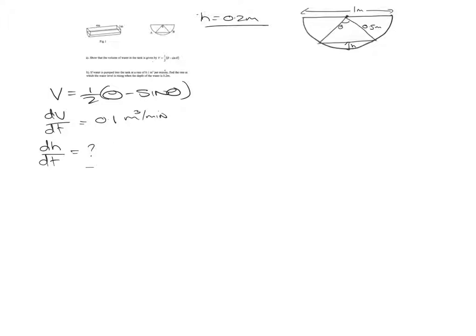So first of all, let's look at what we need to do. We want dH by dt. We know dV by dt. Now, we don't want a dV, so we need to cancel that out. So we need dV on the bottom.